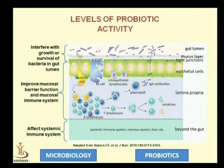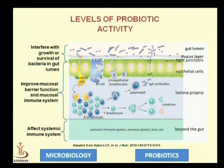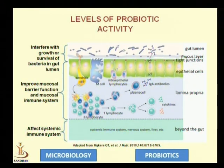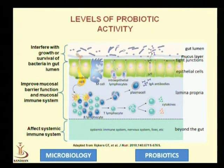To fight this, probiotic microorganisms act at three different levels. The first level is interference with the growth or survival of bacteria in the human gut. Probiotics directly inhibit the entry of pathogens into the gut either by colonization resistance or by producing certain kinds of toxins.